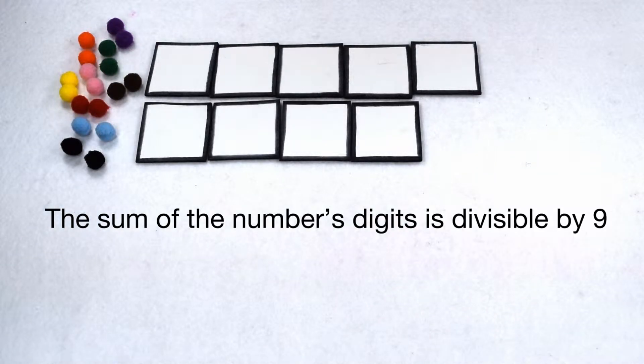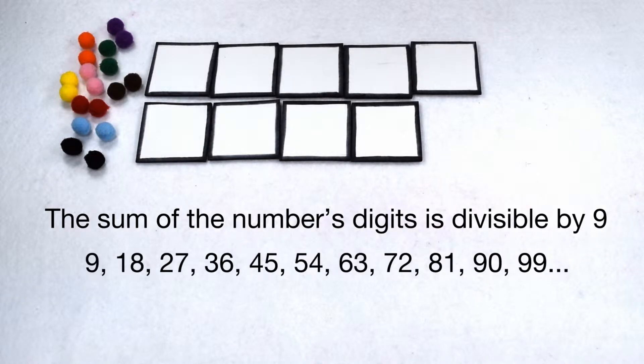Let's start with a list of multiples of 9 so we can compare. Multiples of 9 include 9, 18, 27, 36, 45, 54, 63, 72, 81, 90, 99, and so on.